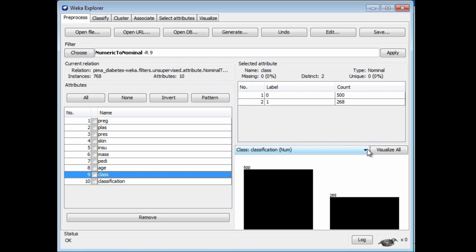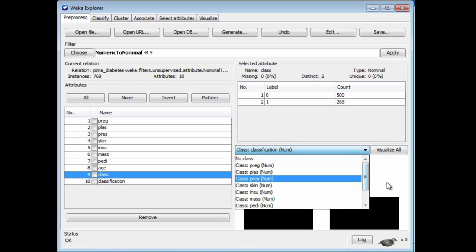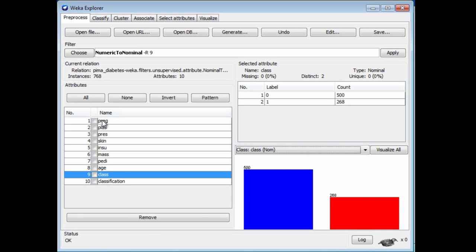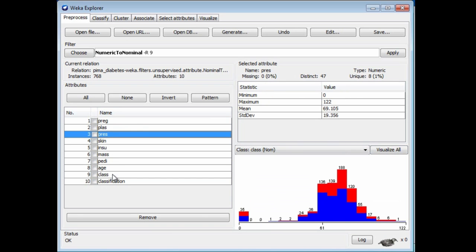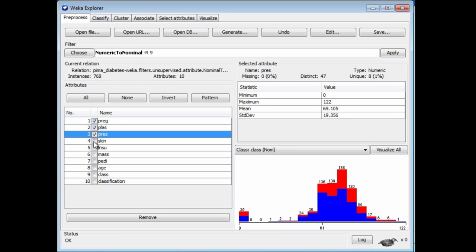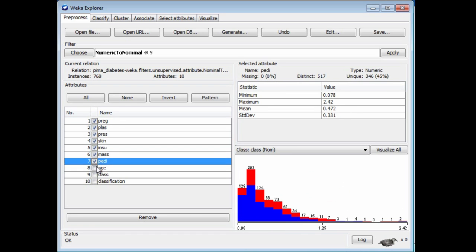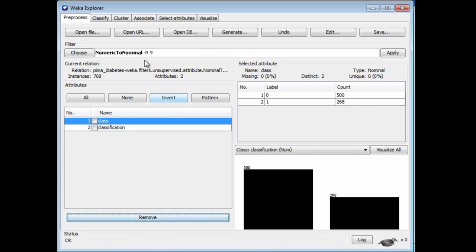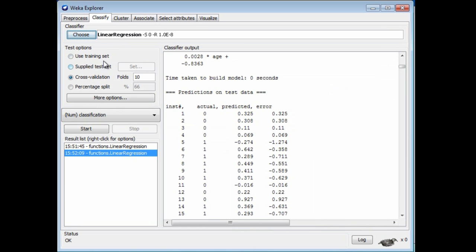If I actually want to make that the class attribute for the data set, then I get the colors back, the two colors for the two classes. I want to predict this class based on the value of classification, that numeric value. So I'm going to delete all of the other attributes.